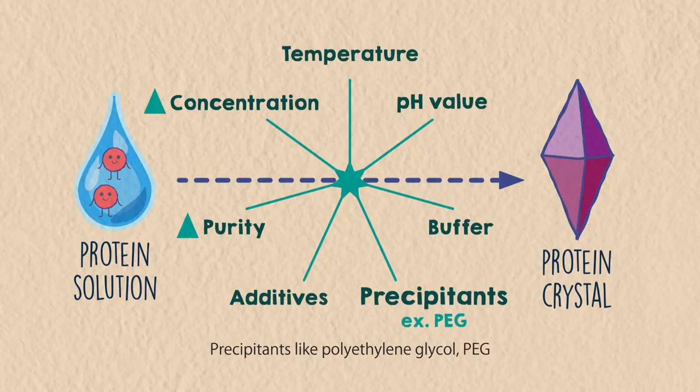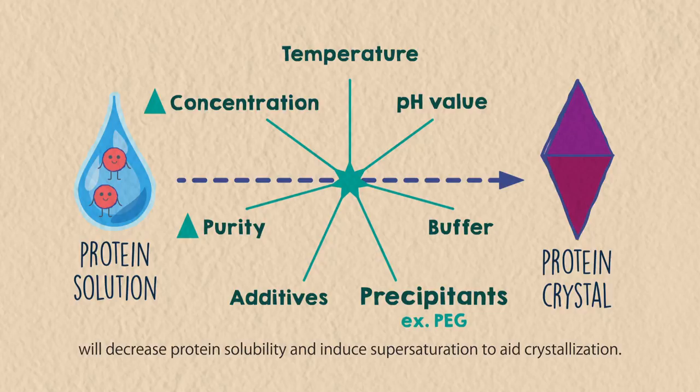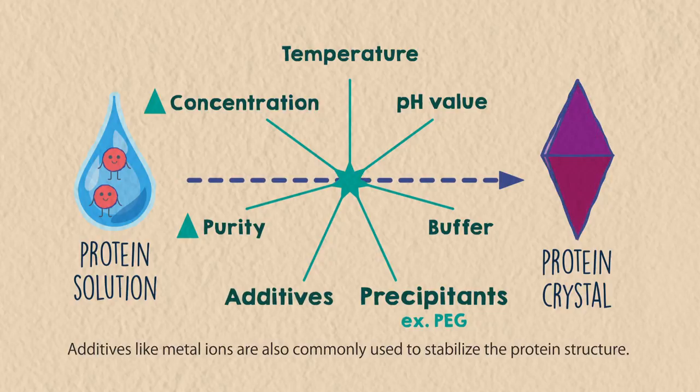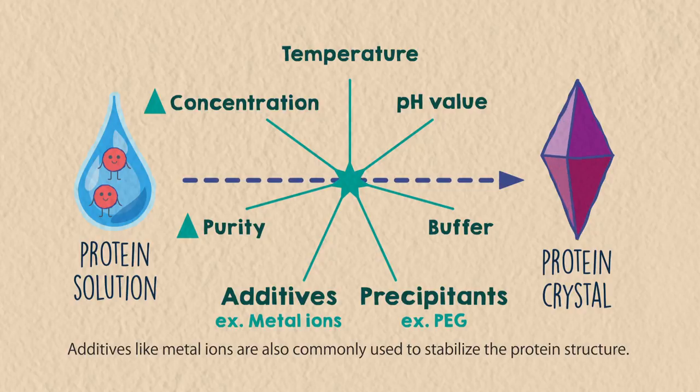Precipitants like polyethylene glycol, PEG, will decrease protein solubility and induce supersaturation to aid crystallization. Additives like metal ions are also commonly used to stabilize the protein structure.